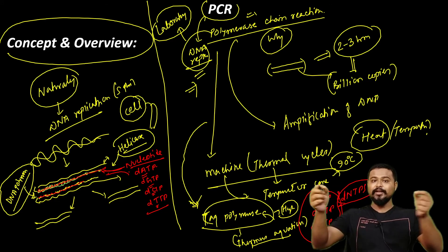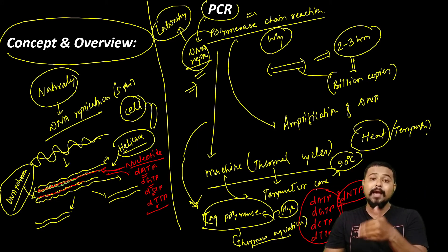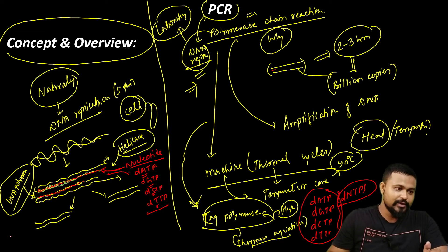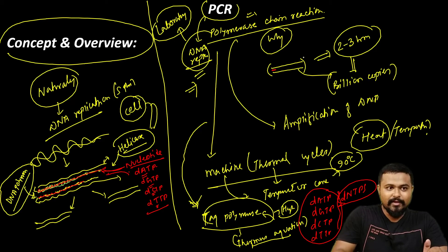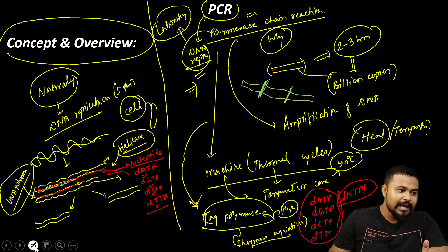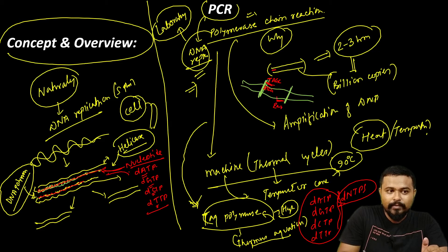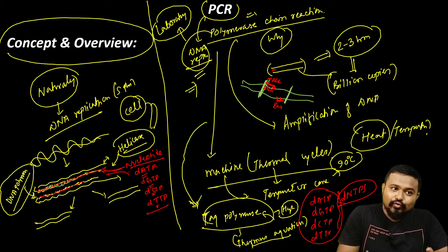We need to amplify a specific DNA fragment. To do this, we need primers. The DNA fragment is large, so we use a forward primer and a reverse primer. These primers are complementary to the target DNA sequence and bind to specific locations on the single-stranded DNA.